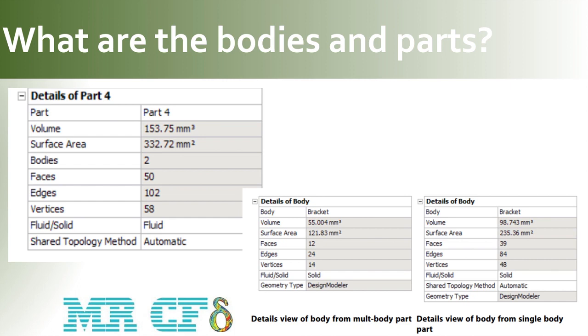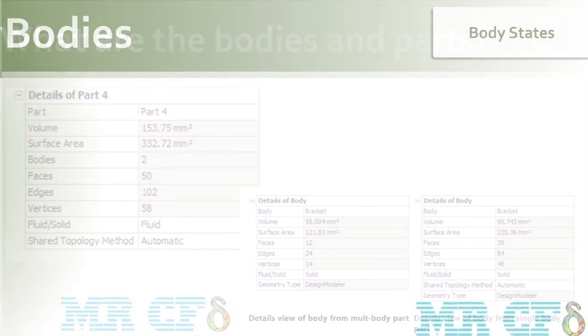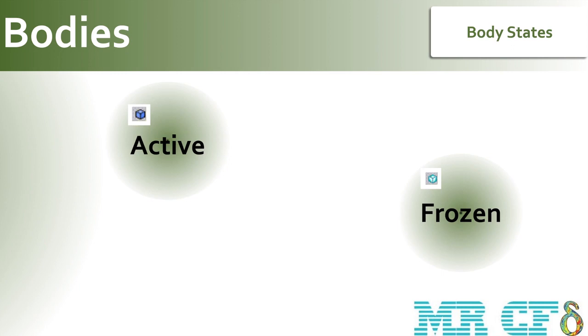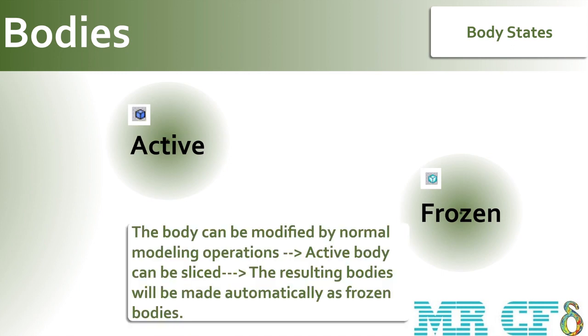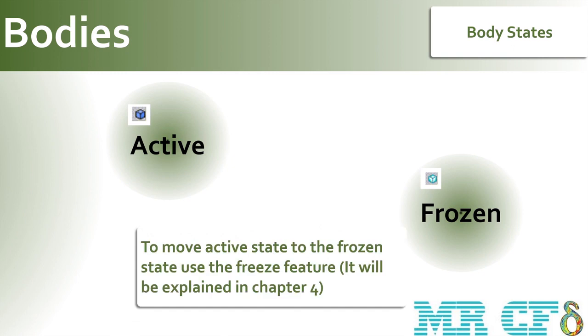For parts, the sums of the volumes and surface areas of bodies contained within the part are displayed. Volumes and surface areas are measured automatically up to the limit specified by the measure selection limit setting in the options dialog. There are two states for bodies in the ANSYS DesignModeler application: active and frozen. An active body can be modified by normal modeling operations.